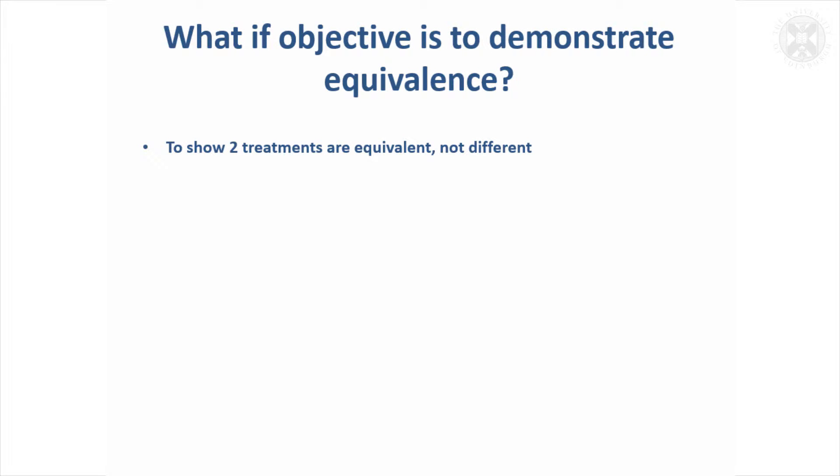So we've been talking about the objective being to find out how many you need to get statistical significance. Occasionally the objective might be to say, I want to prove that the effect of these two treatments is equivalent, so that they're not different. So that's kind of turning things around a bit.